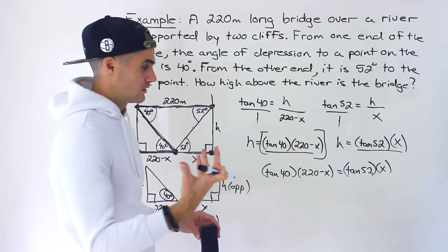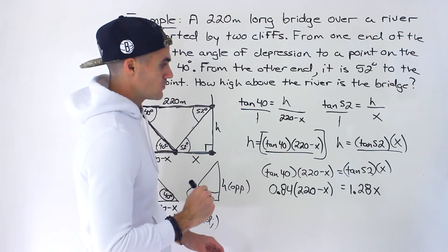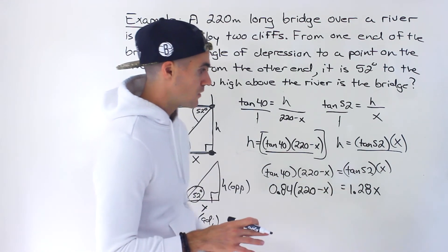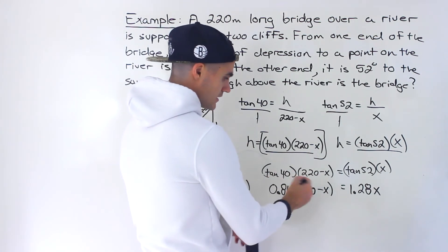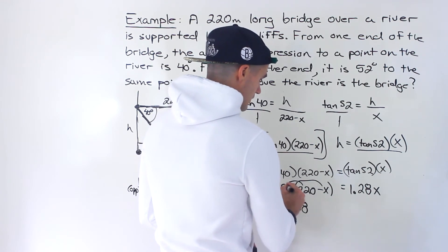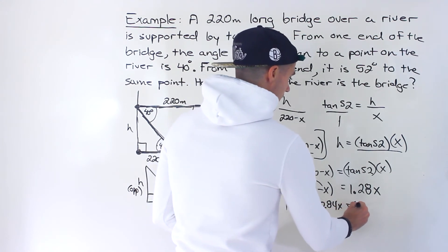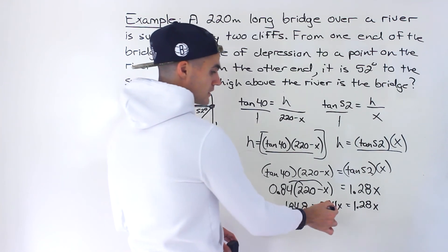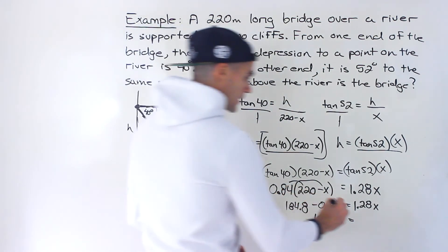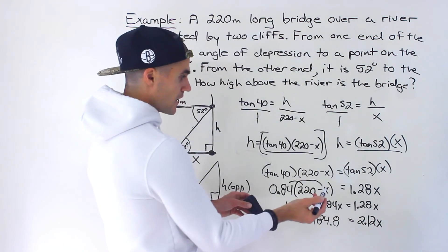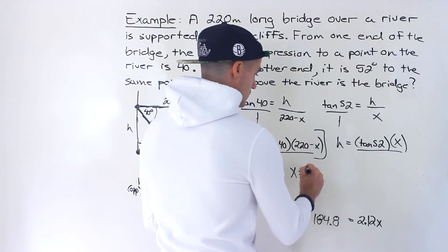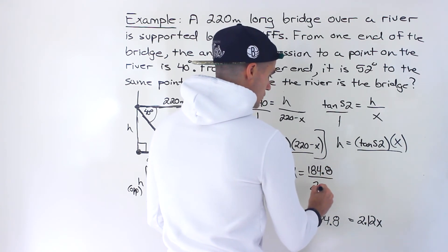Substituting the decimal approximations — tan(40°) ≈ 0.84 and tan(52°) ≈ 1.28 — and distributing: 0.84 × 220 = 184.8, so we get 184.8 − 0.84X = 1.28X. Bringing the X terms together: 184.8 = 1.28X + 0.84X = 2.12X. Dividing both sides by 2.12 gives X = 184.8 / 2.12.